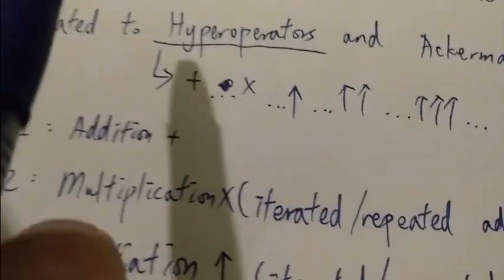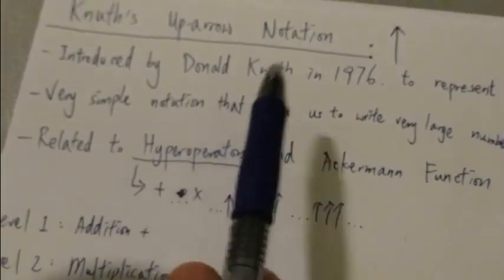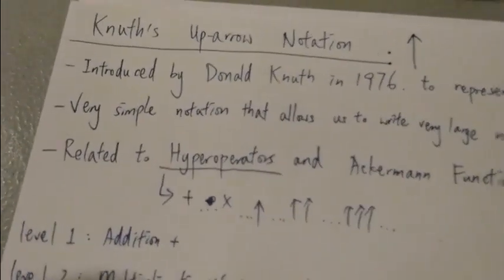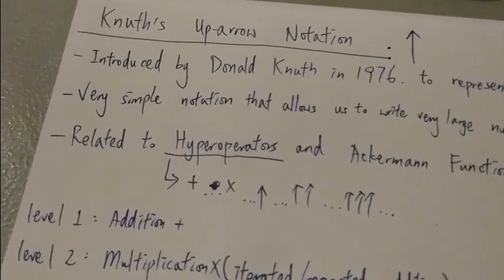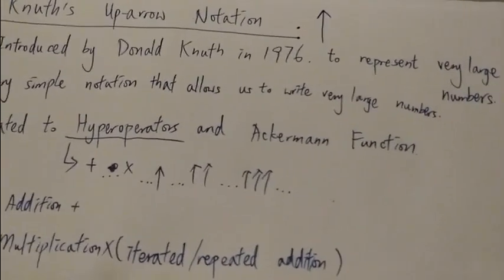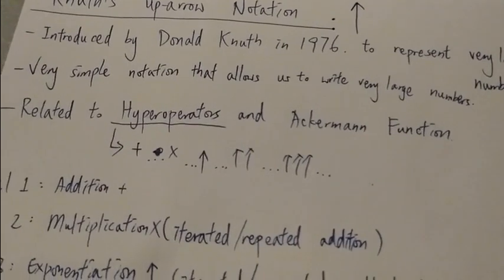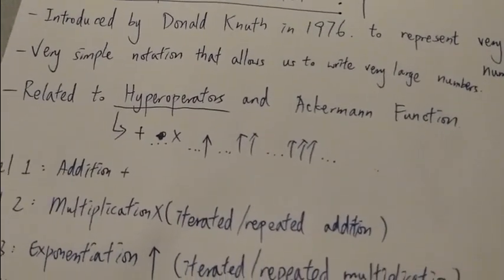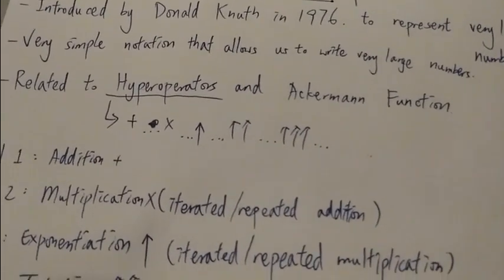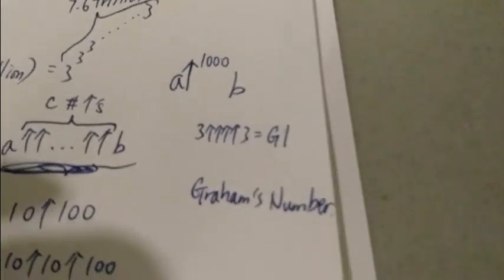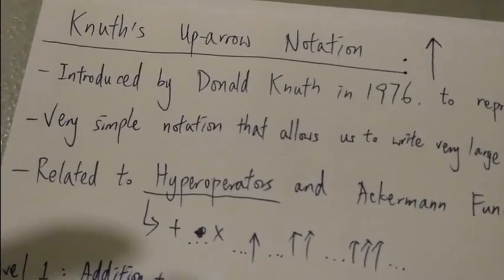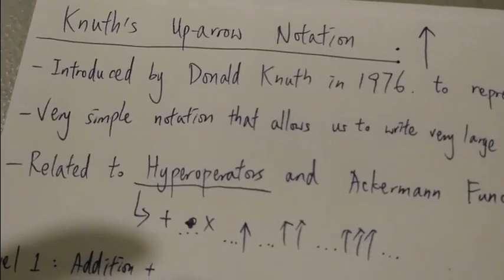So in other words, Knuth's up arrow is a very useful tool, or a very simple notation that allows us to write extremely large numbers. I mean, we can write a very big number in such a short way or such a simple way. So this is Knuth's up arrow notation. Thanks for watching, and have a nice day.